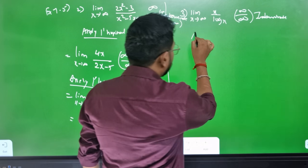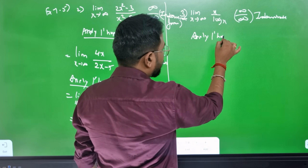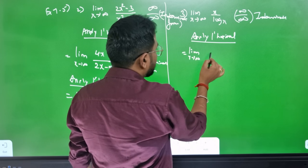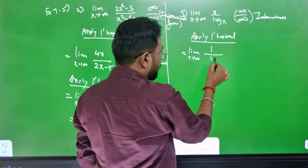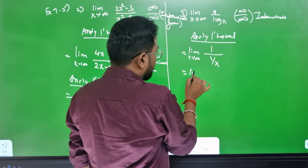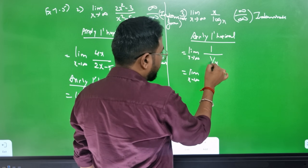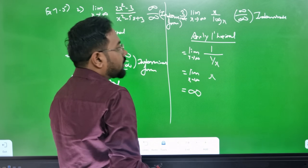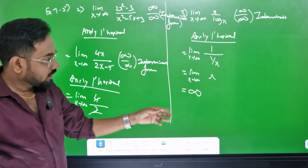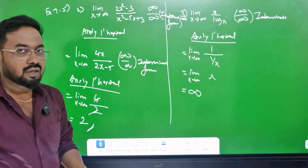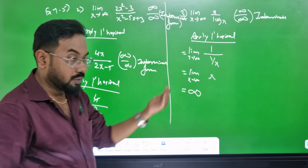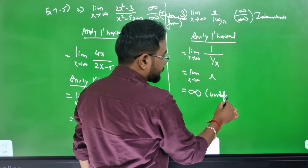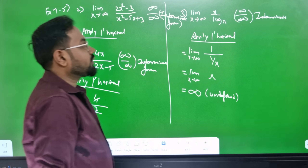Apply L'Hôpital's rule: limit as x tends to infinity. Differentiate: x differentiates to 1, log x differentiates to 1 by x. So limit becomes x over (1 by x) which tends to infinity. Infinity by infinity — the answer is infinity.